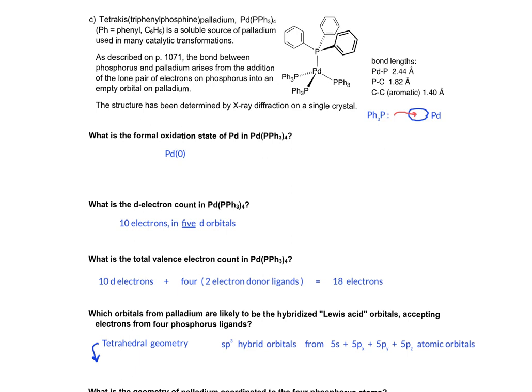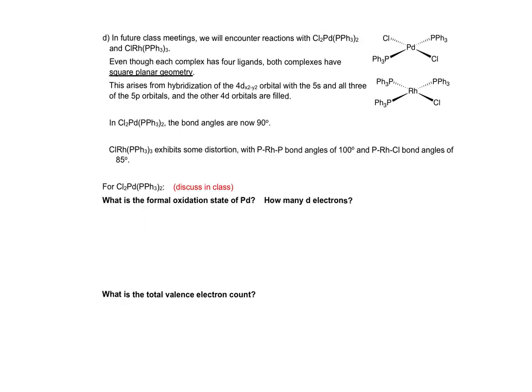Turning to the next page of the worksheet. In class, we'll discuss these two complexes of palladium and rhodium. From X-ray crystallography, we know that both complexes have square planar geometry. This is a geometry that you may not have seen yet in the Chemistry 202 or 203 courses. The explanation of this geometry is consistent with four of the d orbitals that are filled, with one of the d orbitals being unfilled and hybridizing with the s and all three of the p orbitals in what we call dsp2 hybrid.